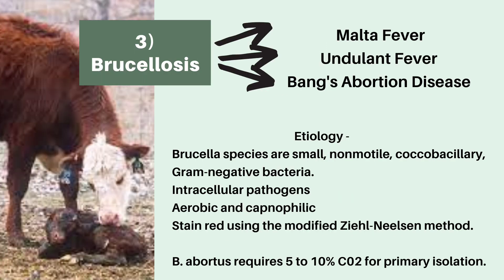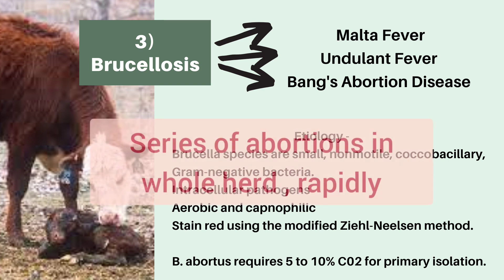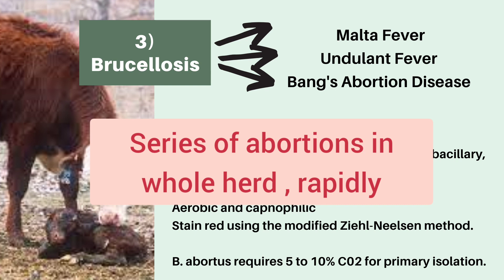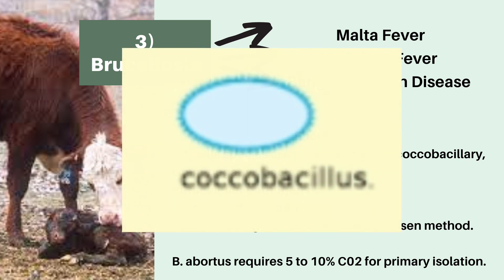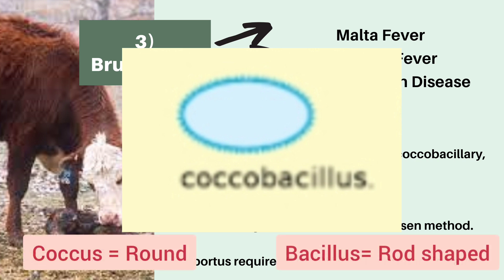Now let's talk about our last bacterial disease — brucellosis. Brucellosis is also known as Malta fever, undulant fever, and Bang's abortion disease. It is called an abortion disease because it causes a series of abortions in the whole herd rapidly. As for the etiology, Brucella species are small, non-motile, coccobacillary, gram-negative bacteria. Coccobacillus is a bacterial shape intermediate between a coccus — that is round — and bacillary — that is rod-shaped.